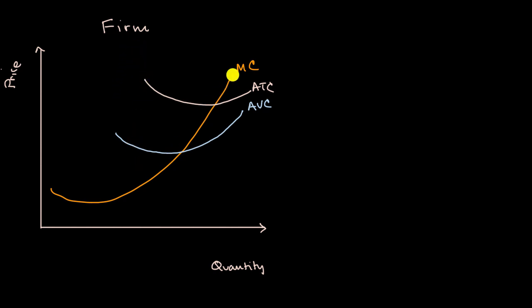We can see how the marginal cost relates to the average variable cost and average total cost. We see that trend that marginal costs can trend down initially because as quantity increases, each incremental unit could benefit from things like specialization.